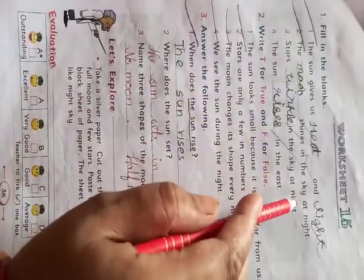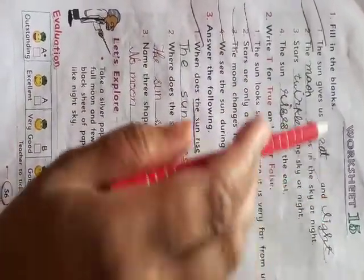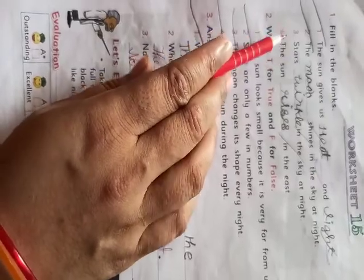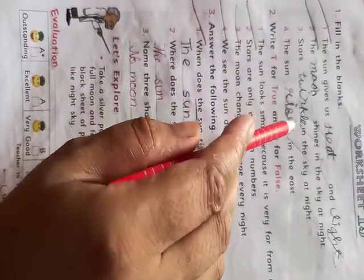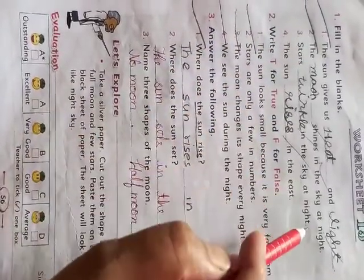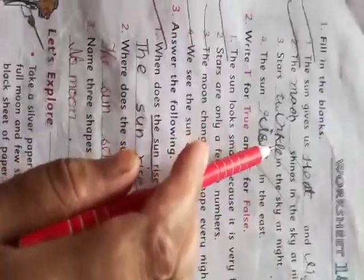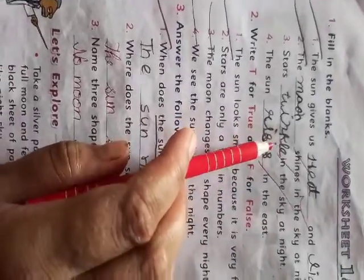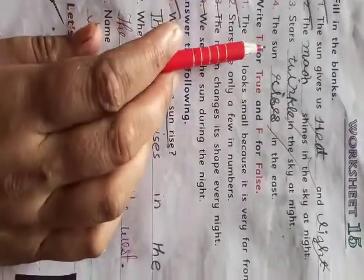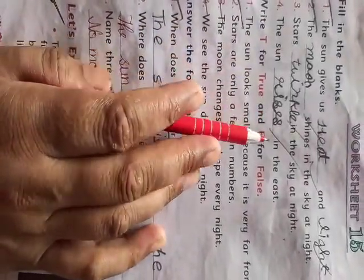Second: the moon (m-o-o-n) shines in the sky at night. Third: stars (s-t-a-r-s) twinkle (t-w-i-n-k-l-e) in the sky at night. Fourth: the sun rises (r-i-s-e-s) in the east.